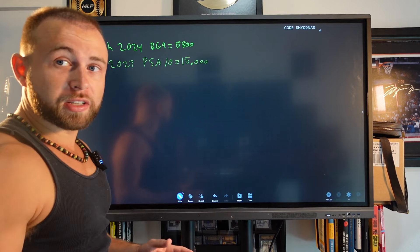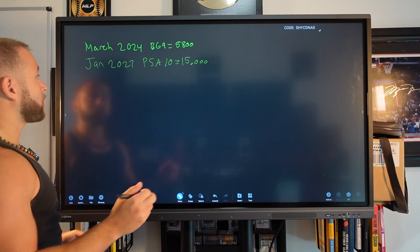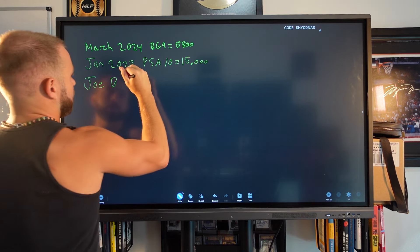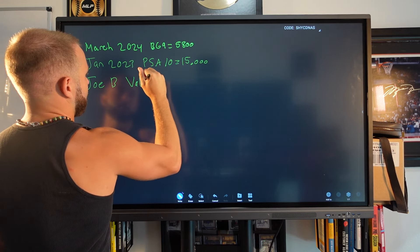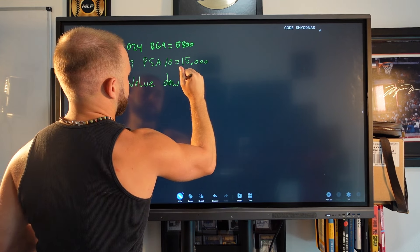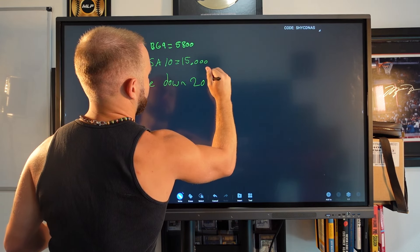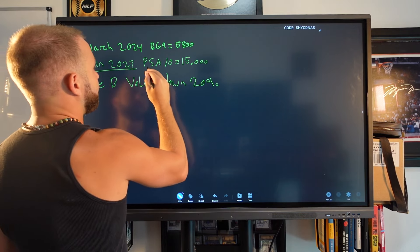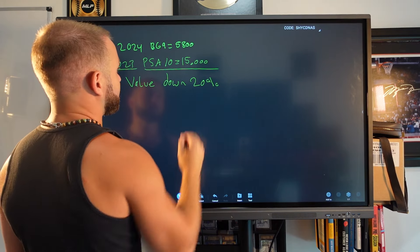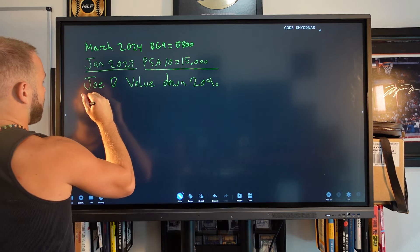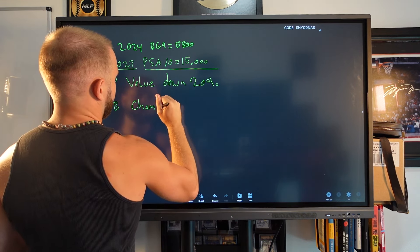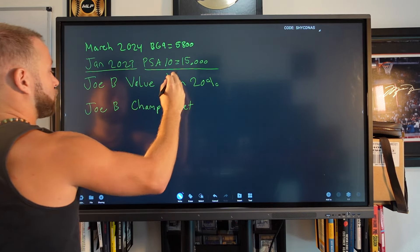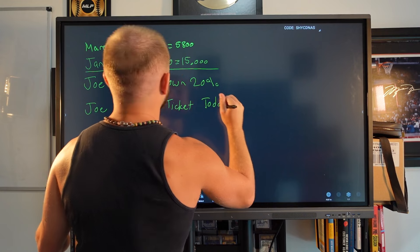However, what did we discover? Well, we discovered Joe Burrow's value is down 20%. So in January of 2023, if this value is down 20% since then, that means a Joe Burrow Championship ticket, that's the name of the card I bought, Championship ticket would be worth today, it would be worth 20% less than this. So what's 20% less than $15,000? Well, that is $12,000.